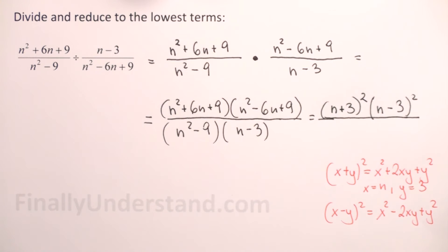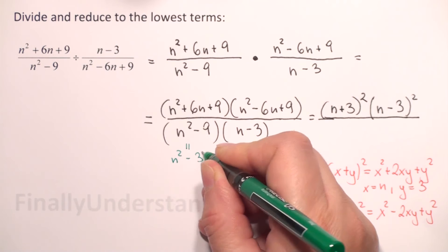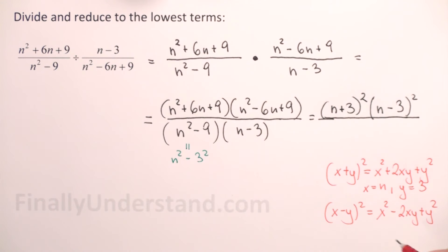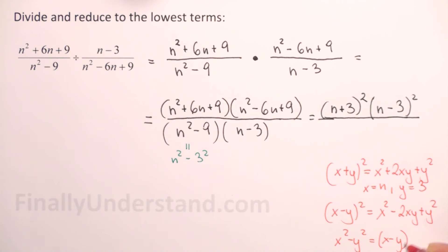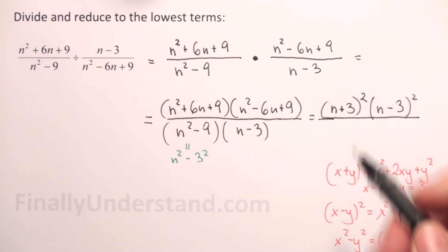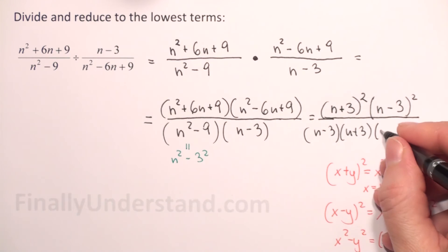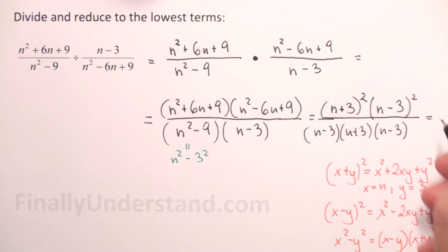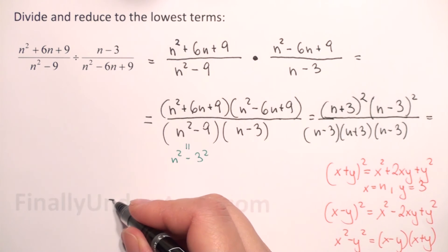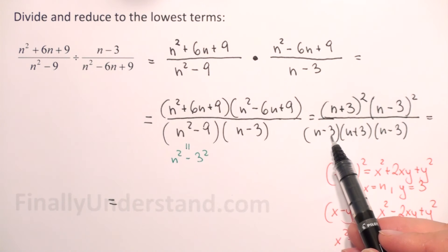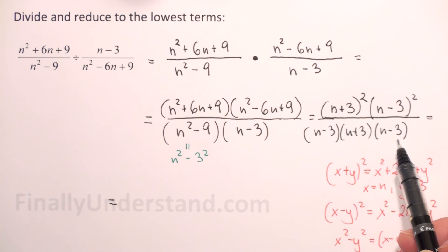For the denominator, n squared minus 9 is rewritten as n squared minus 3 squared. Using the difference of two perfect squares formula — x squared minus y squared equals x minus y times x plus y — the denominator becomes n minus 3 times n plus 3. We also copy n minus 3, giving n minus 3 times n minus 3, which is n minus 3 to the second power.